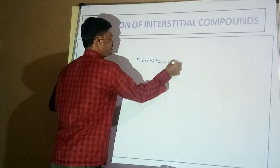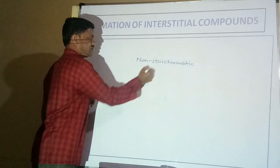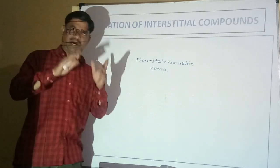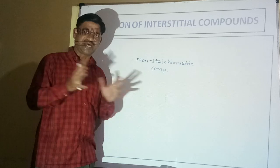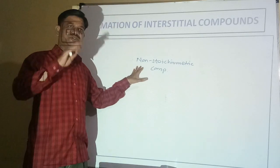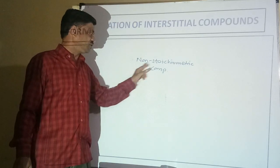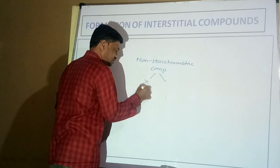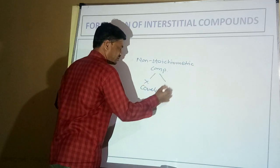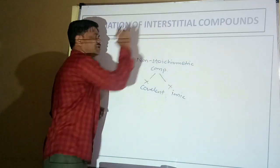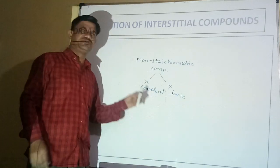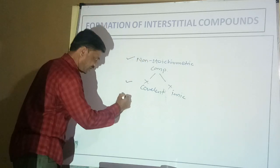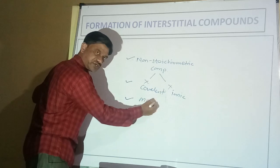Interstitial compounds are non-stoichiometric compounds, meaning the cations and anions are not in exact proportion — there may be some deviation. What type of bonding is expected? It is neither covalent nor ionic in interstitial compounds. Remember other properties of interstitial compounds.